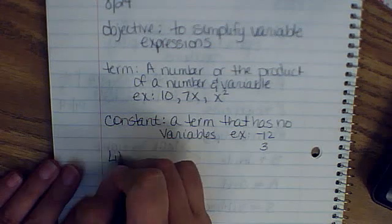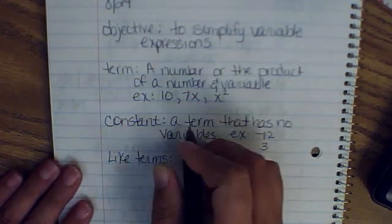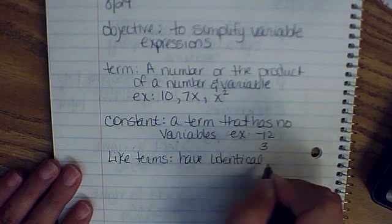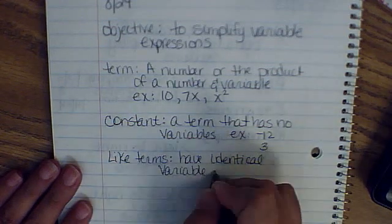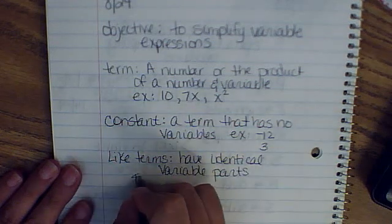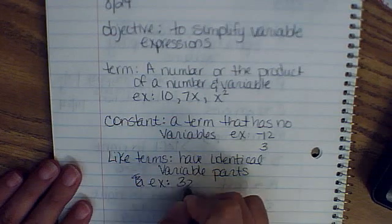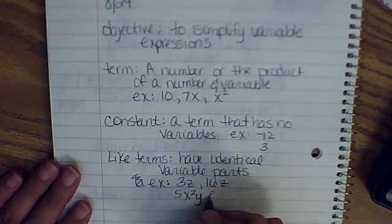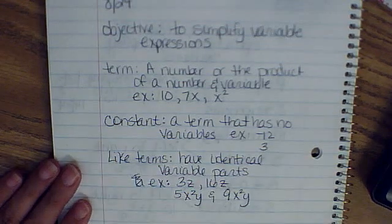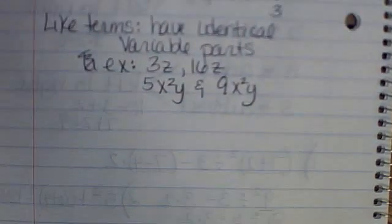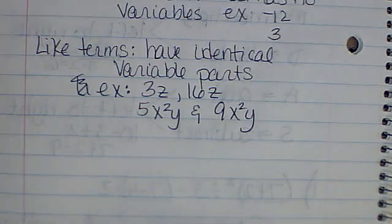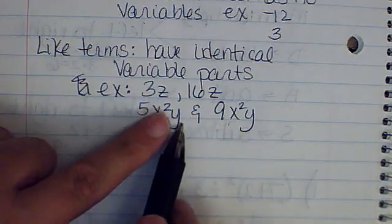Next, we're going to talk about like terms. Like terms have identical variable parts. For example, 3z and 16z are like terms. 5x squared y and 9x squared y are like terms because they both have x squared y.